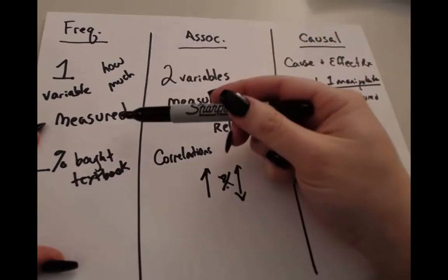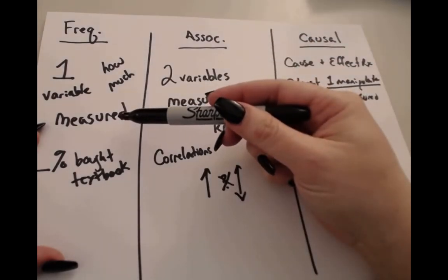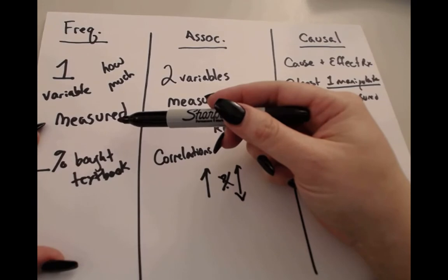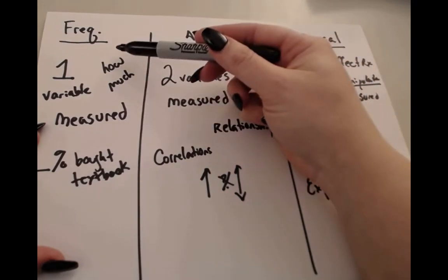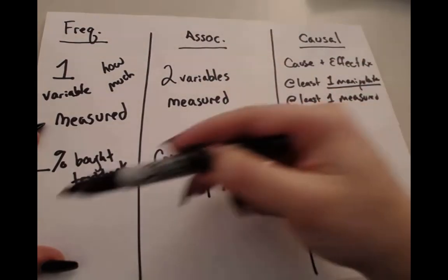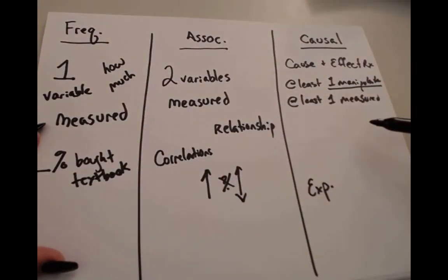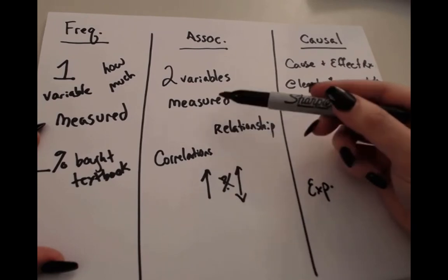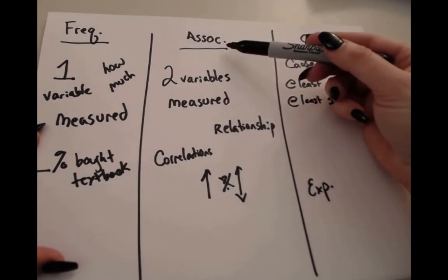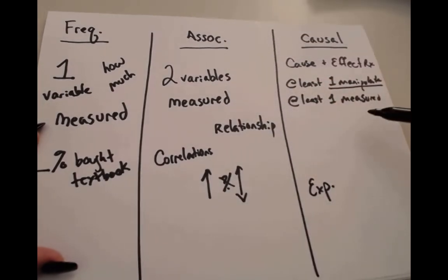So if you read a description and there's only one variable, and that variable is measured, we know it's a frequency claim. If there's two variables, we know it can't be a frequency claim. It's either an association claim or a causal claim. If the two variables are only measured, it's clearly an association claim. And if one of those variables is manipulated, then it may be a causal claim.